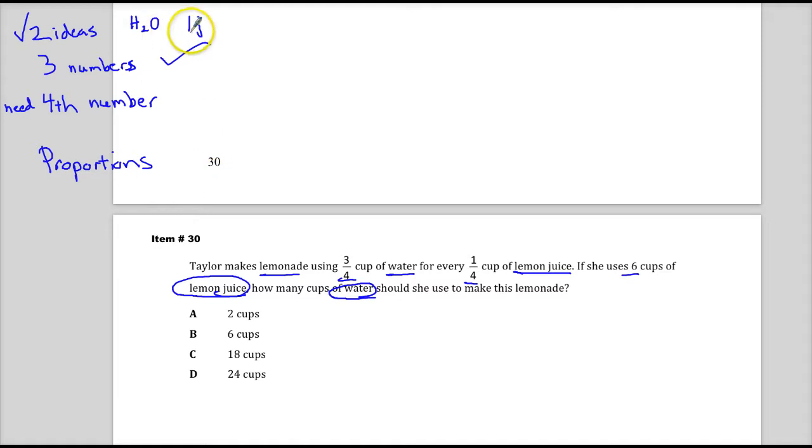So I'll make this LJ. So water, lemon juice, lemon juice. So I have two for lemon juice, one for water. So yeah, I need the fourth number about water. This is a proportion.